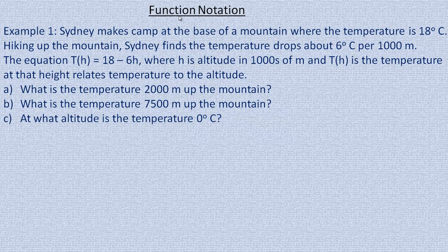In this first example, Sydney makes camp at the base of a mountain where the temperature starts at 18 degrees Celsius. As she hikes up the mountain, she finds that the temperature drops about 6 degrees per thousand meters — remember, it's per thousand, not per meter. The equation is t of h equals 18 minus 6h, where h is the altitude in thousands of meters.